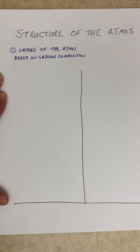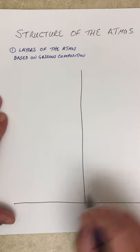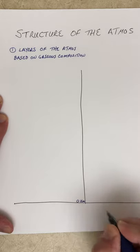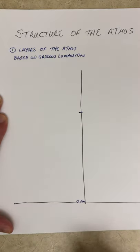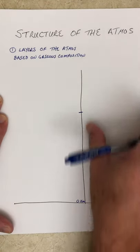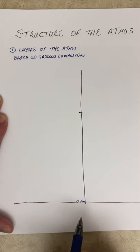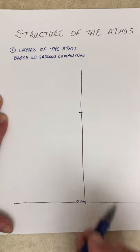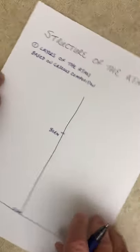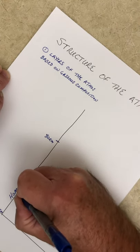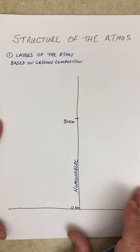There are two layers of the atmosphere that are based on gaseous composition, so let's start off with our figure here. If we have the surface at zero kilometers and go up to about 80 kilometers — if you're drawing these pictures along with me, leave room off to the right because we're going to look at the structure based on temperature trends on the right-hand side. From zero to 80 kilometers, we call this the homosphere.